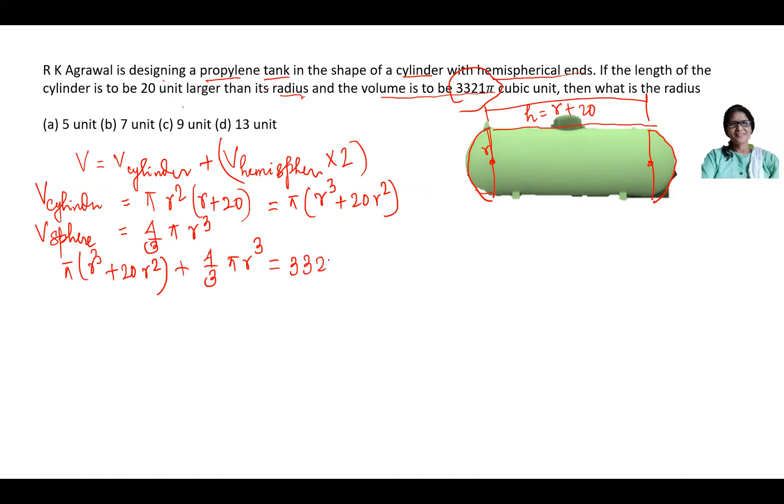πr³ plus 20πr² plus 4/3 πr³ equals 3321π. I can cancel π. I will get r³ plus 20r² plus 4/3 r³ is equal to 3321. I have to solve it.